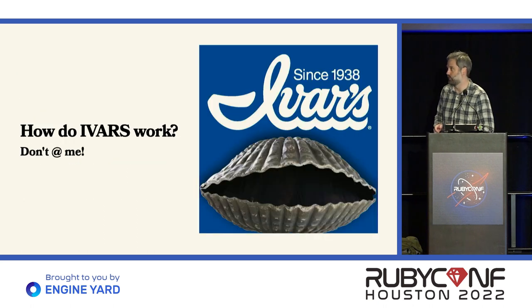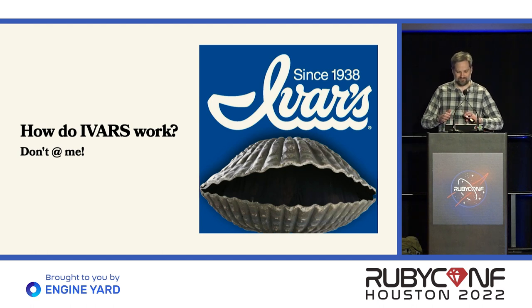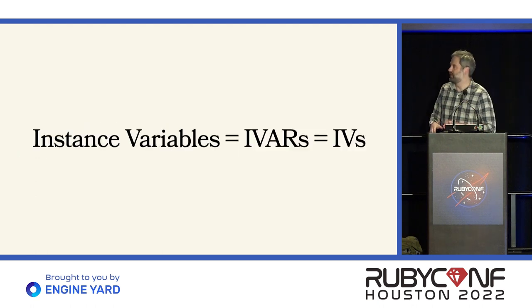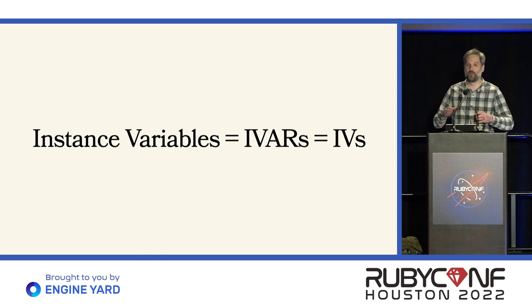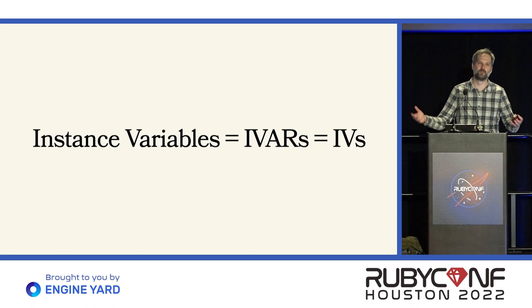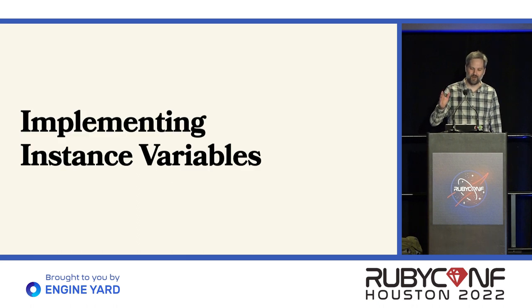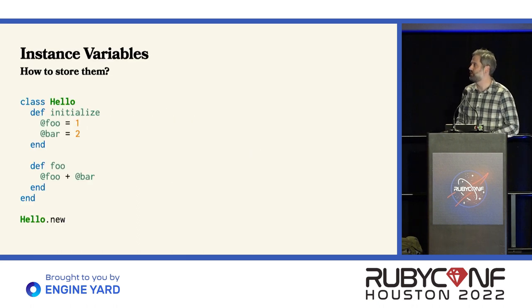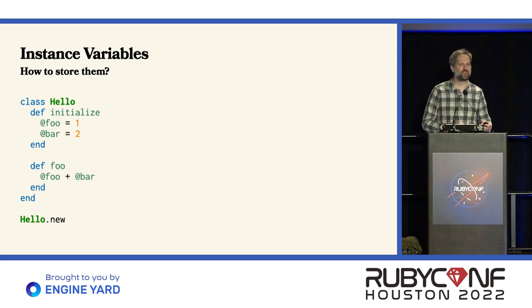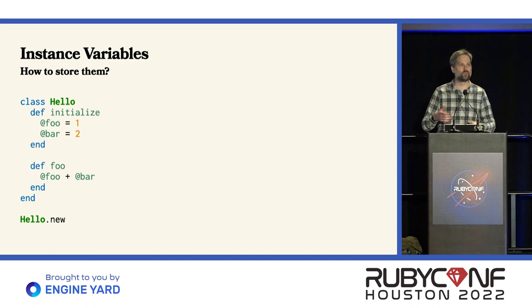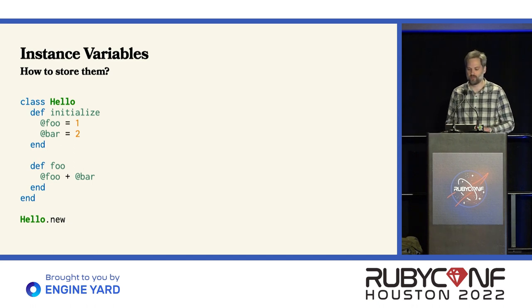Let's talk about how IVARs work. I'll refer to them as instance variables, also IVARs and also IVs — those all mean the same thing. So let's talk about implementing instance variables. Let's say we have a very simple class with a couple of instance variables on it. If we were implementing a language, how might we store this data? A really simple way to accomplish this would be to store your instance variables in a hash table on the instance. We'd have our instance of Hello with a hash table where the key is the name of the instance variable and the value is the value of the instance variable.